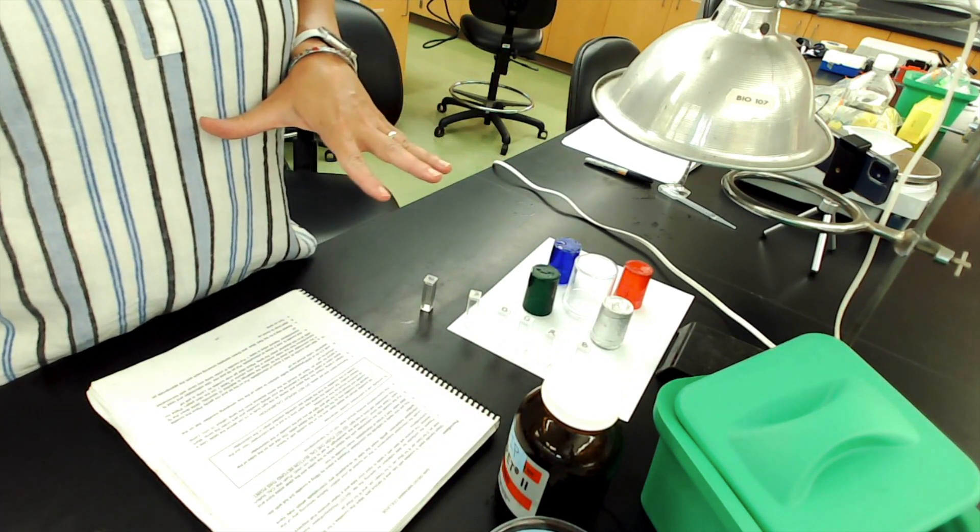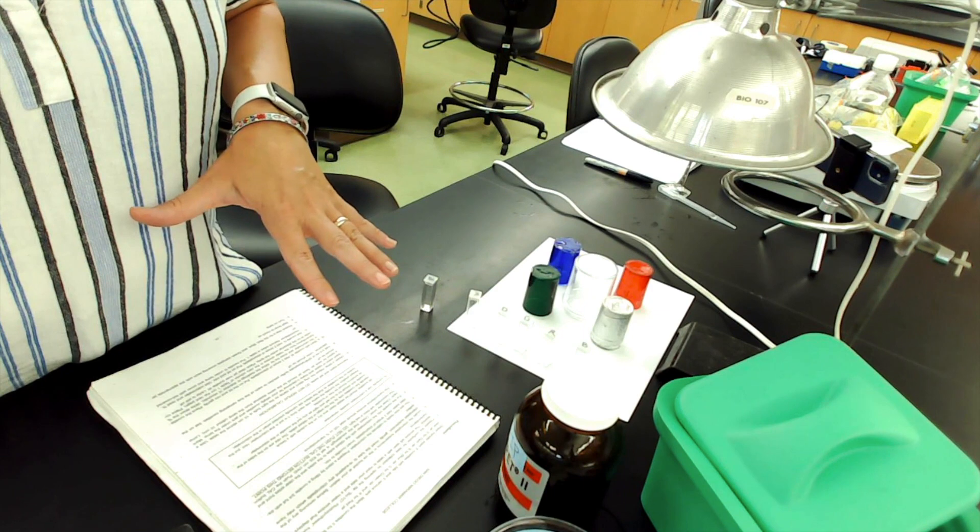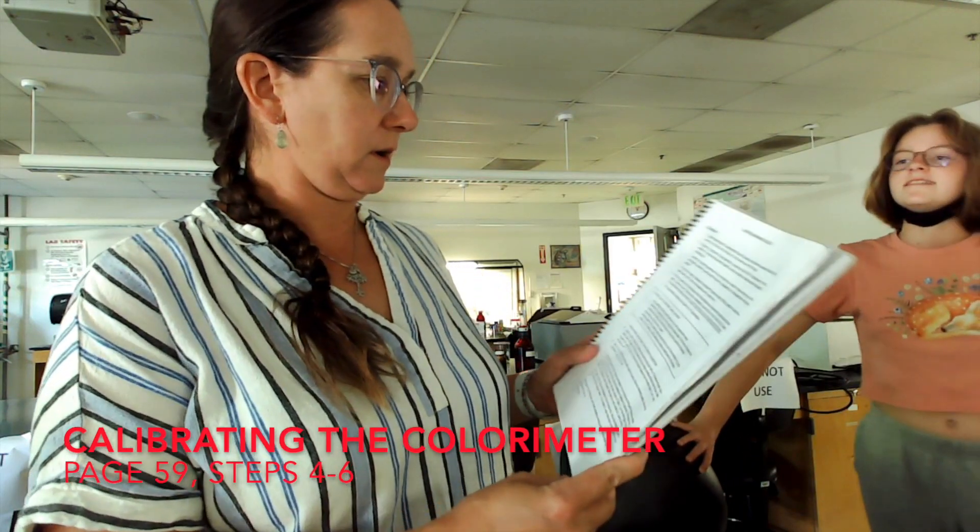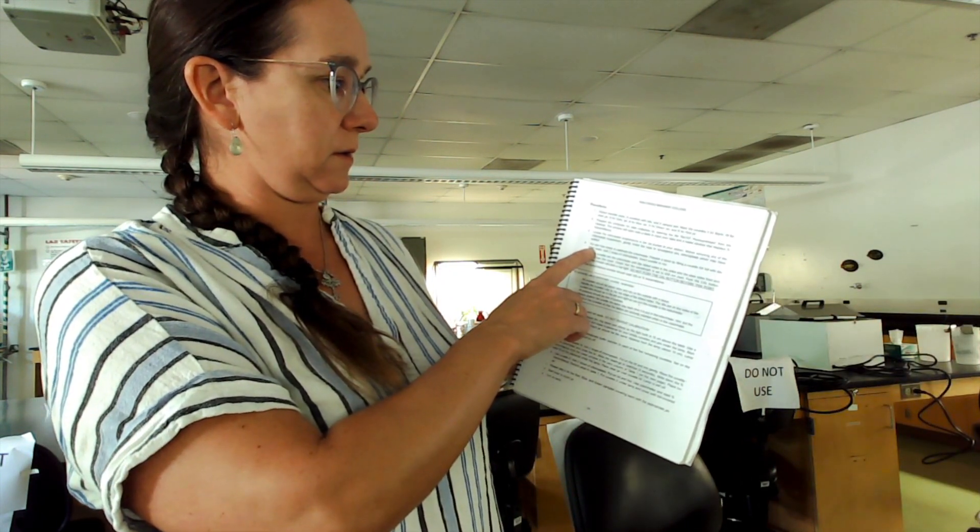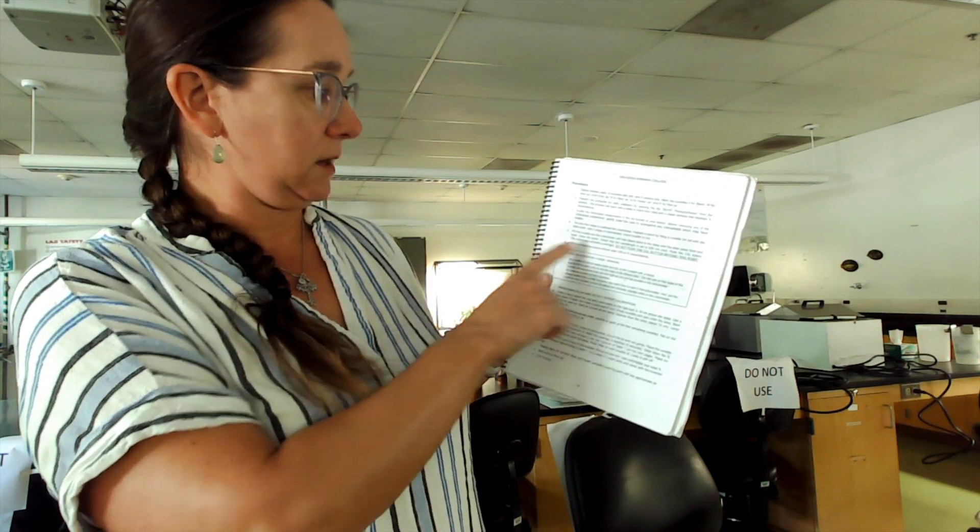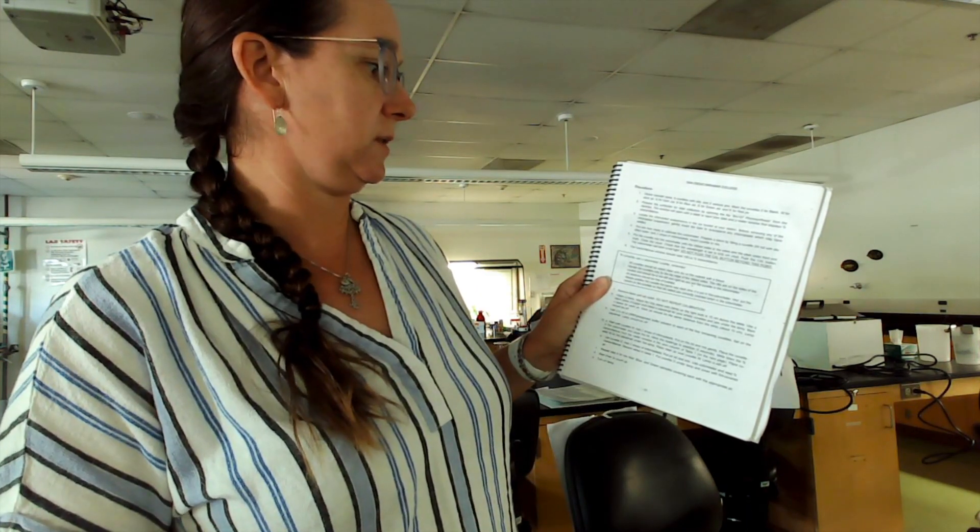Next up, I'll show you guys how to set up the tubes and make a blank for the machine. I'm going to start here with this calibration step. We're going to go to step number four on page 59. We're now ready to calibrate the colorimeter. Prepare a blank by filling a cuvette three quarters full of distilled water and add two drops of chloroplast.